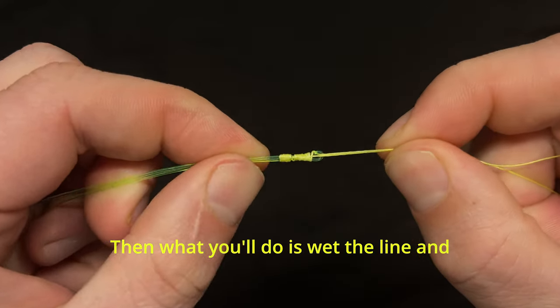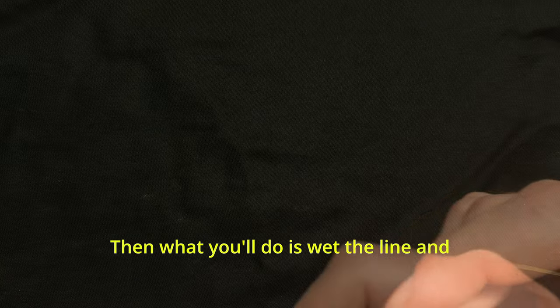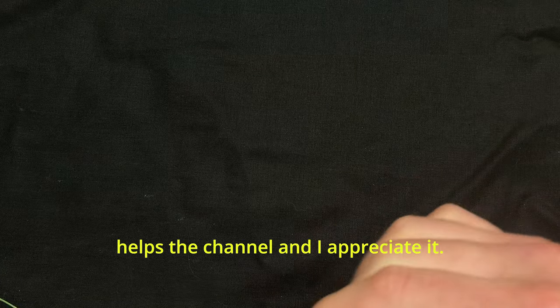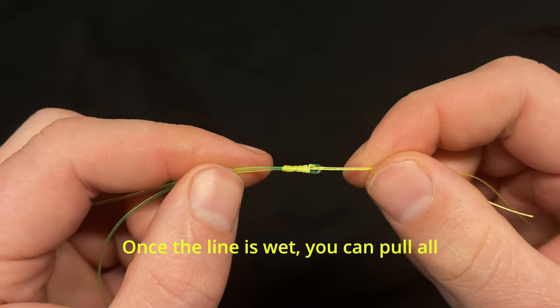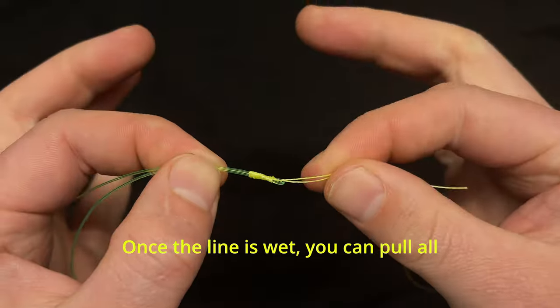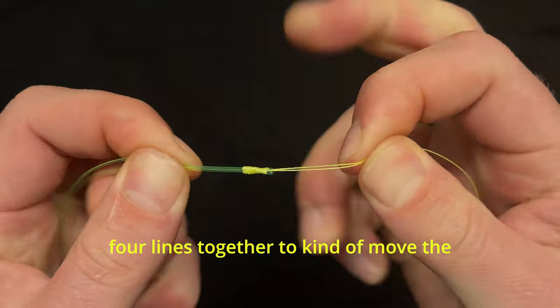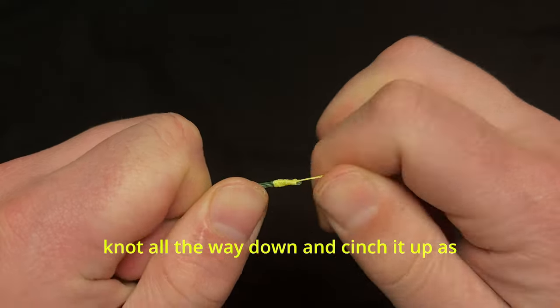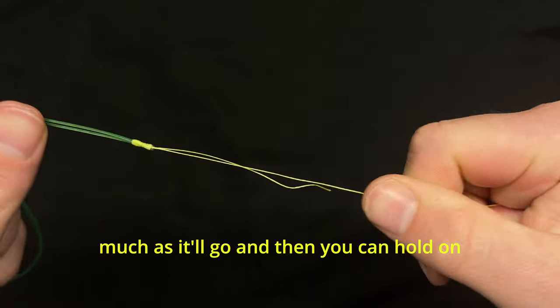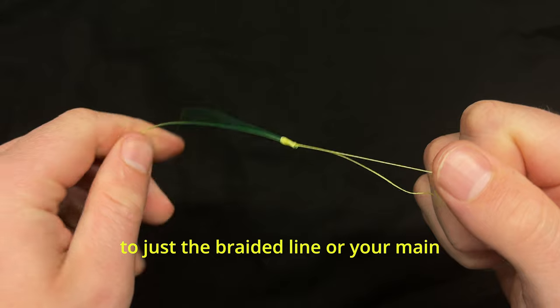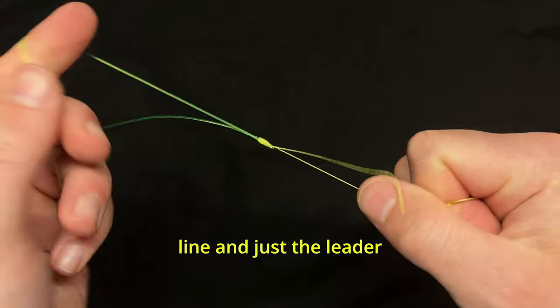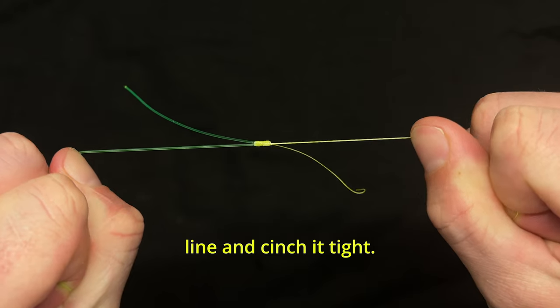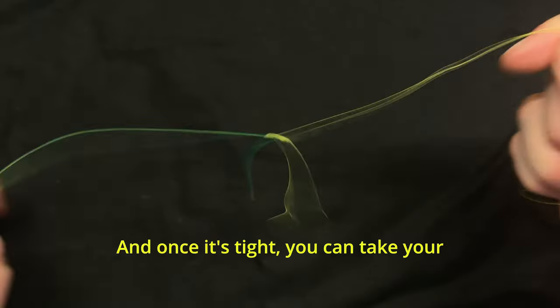Then wet the line, and while that's happening, if this video has been helpful to you, hitting that subscribe button really helps the channel and I appreciate it. Once the line is wet you can pull all four lines together to move the knot all the way down and cinch it up as much as it'll go. Then hold on to just the braided line or your main line and just the leader line and cinch it tight.